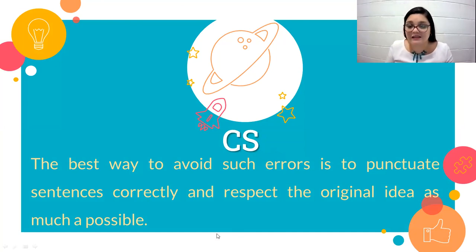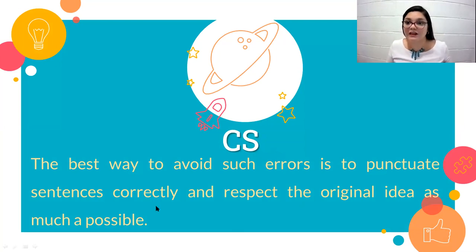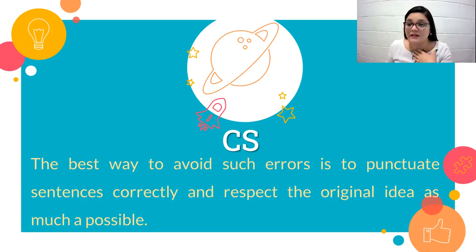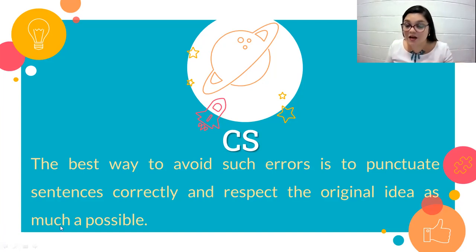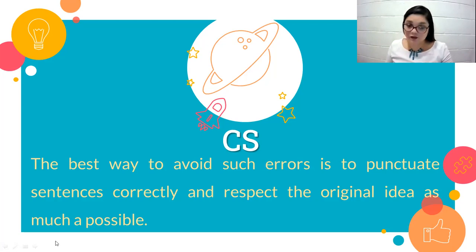The best way to avoid comma splice errors is to punctuate sentences correctly and respect the original idea as much as possible. I give you different ways to correct one thing, and I have presented at least three methods, though there may be more depending on the context. When we fix a mistake in someone's writing, we need to respect the writer's original idea. You have to find a way in which ideas are related and run smoothly, so that you do not change the meaning. Keep the writing as the writer intended.